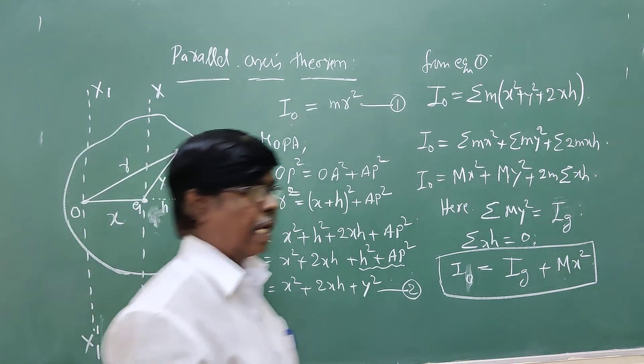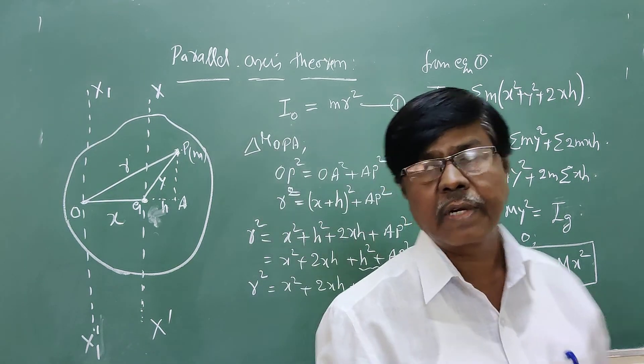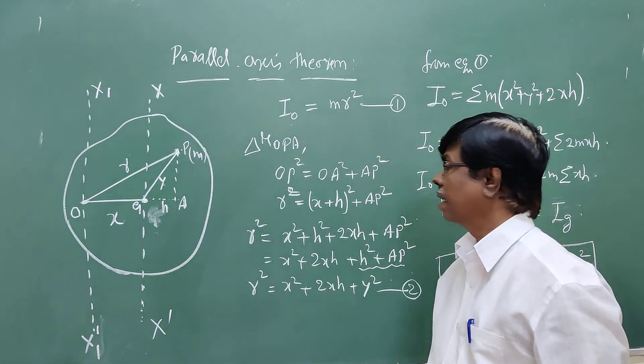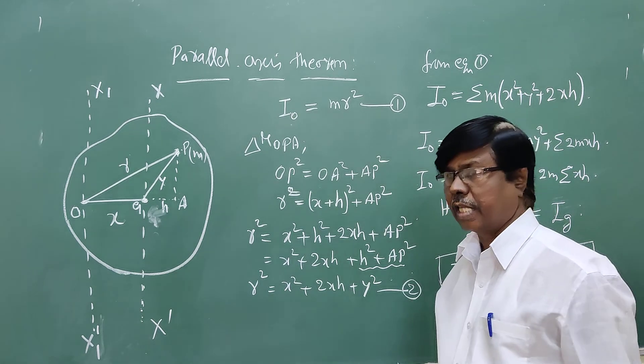Hence the moment of inertia of the whole lamina or body is equal to the sum of the moment of inertia at the centre of gravity and the product of the mass of the whole body and the square of the distance between the two parallel axes. This is the parallel axis theorem.